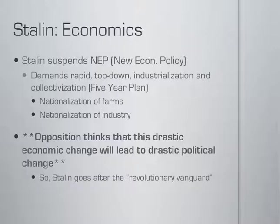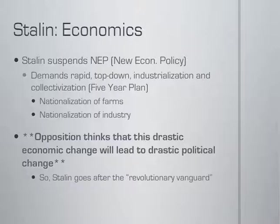Stalin also distances himself from other leaders on economic policy. He despises Lenin's New Economic Policy and creates his own economics, which he calls five-year plans. Unlike Lenin, who is pragmatic and wants to take time getting to the communist economic state, Stalin wants to do it right away — nationalize all the land, nationalize all industries, put people to work based on loyalty to the party, so the government owns and controls everything, all the means of production. This is a very drastic economic policy, and there's fear that such drastic policy could create drastic political change. Those who disagree — the old Bolsheviks, the revolutionary vanguard — say this is too much, we need to take our time. So Stalin starts to eliminate them one by one.